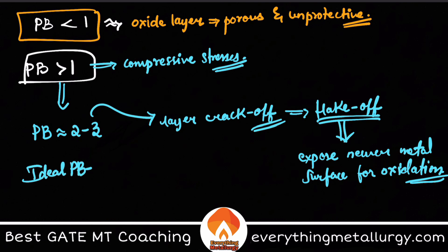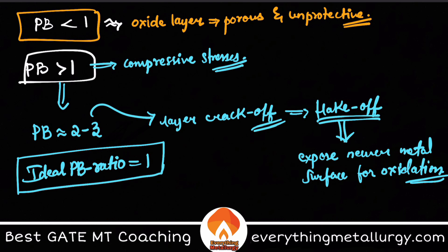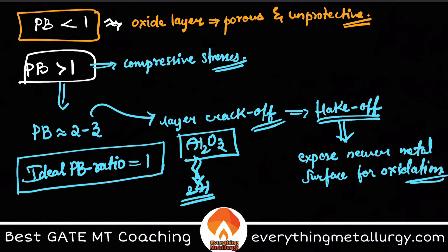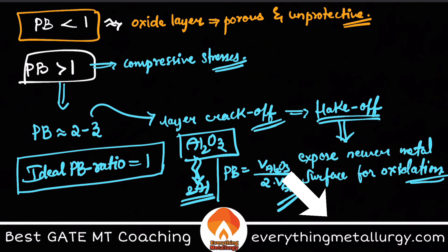The ideal PB ratio is taken to be unity — equal to 1. You can also apply valency terms in the formula. For example, for Al2O3, you have two aluminum atoms involved, so the PB ratio will be the volume of Al2O3 divided by two times the volume of aluminum. You must take the relative volumes — the amount of metal used to form the oxide.